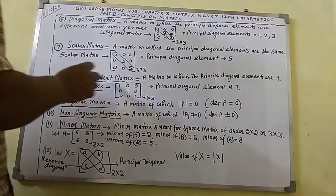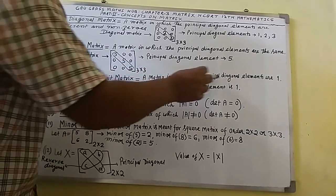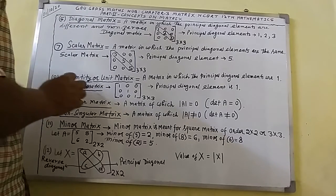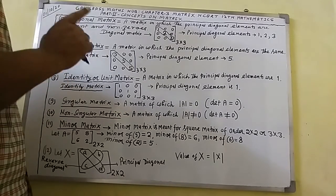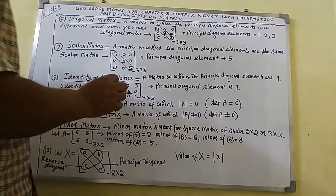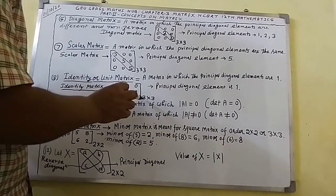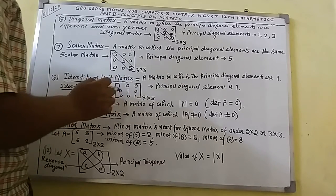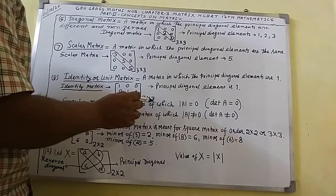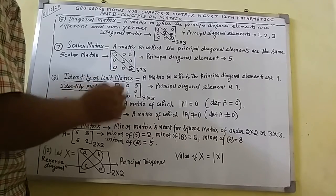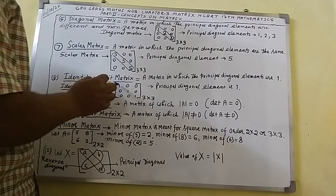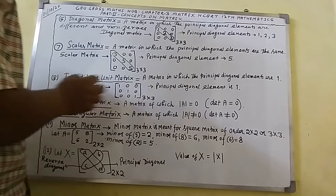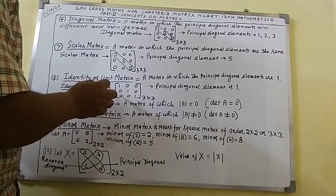Point number 8: identity or unit matrix. This is a matrix in which the principal diagonal elements are 1. Here you can see a matrix of order 3 by 3, with 3 rows and 3 columns. The principal diagonal elements are 1, 1, 1. Since all principal diagonal elements are 1, this matrix is called an identity or unit matrix.